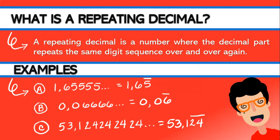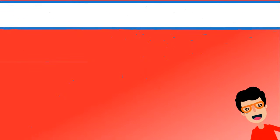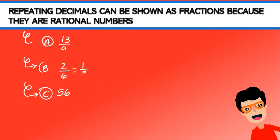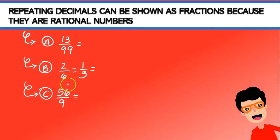When you see a line on top of a decimal number, you know that number is going to be repeating. Repeating decimals can be shown as fractions because they are rational numbers — rational numbers can be written as a fraction p divided by q. Our three examples are: 13 divided by 99, 2 divided by 6 (which simplifies to 1/3), and 56 divided by 9.